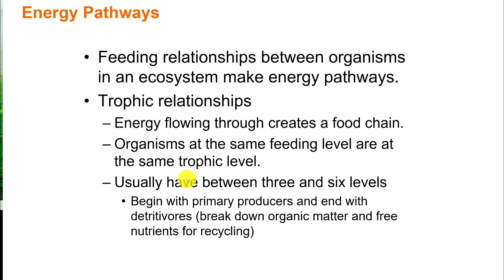Energy is also part of an ecosystem. A feeding relationship between organisms is what makes an energy pathway. Trophic relationships divide up an ecosystem by how energy flows through a food chain. Organisms feeding at the same level are considered to be at the same trophic level, and there are usually between three and six levels within any ecosystem. It begins with primary producers.